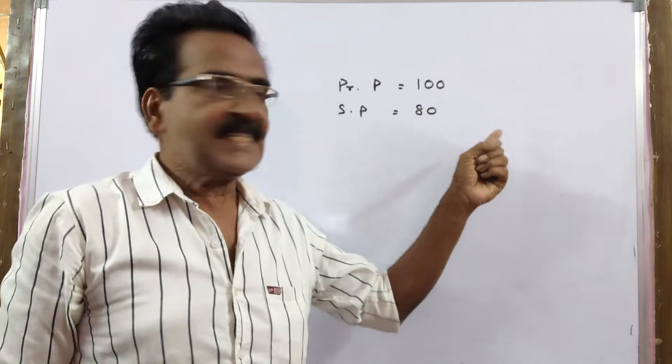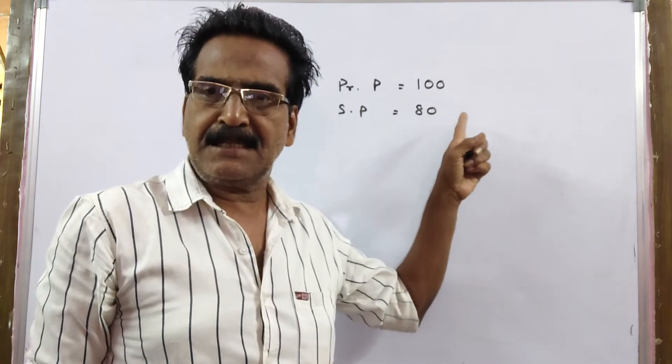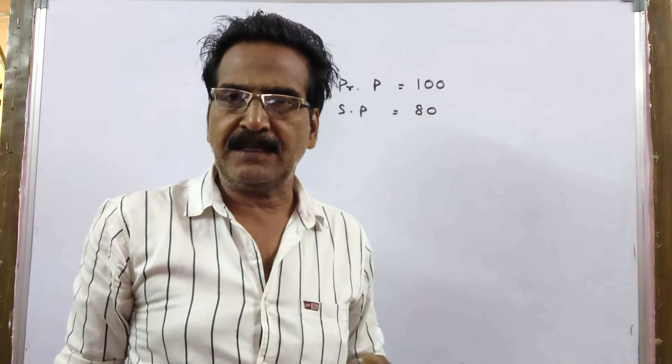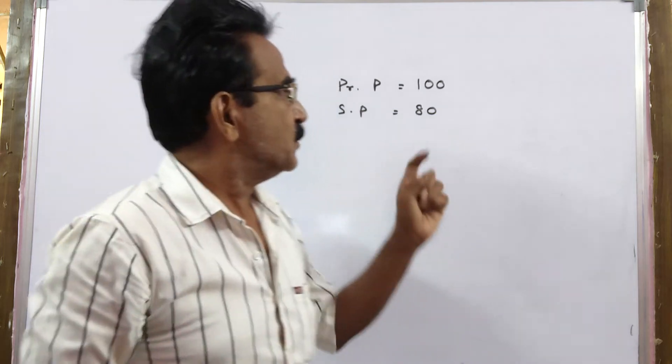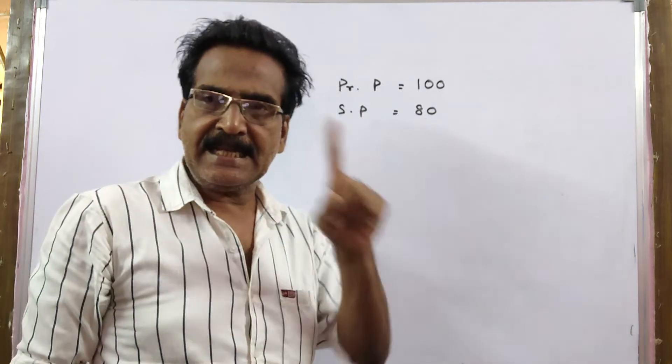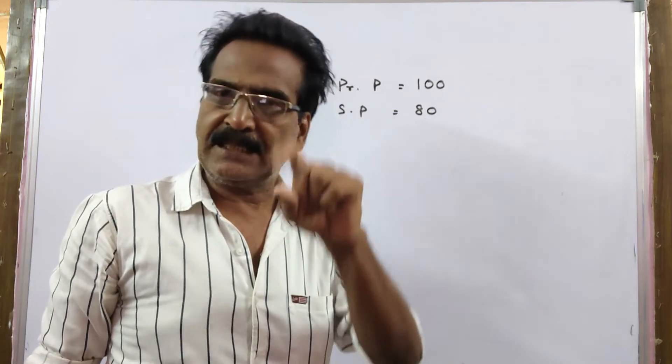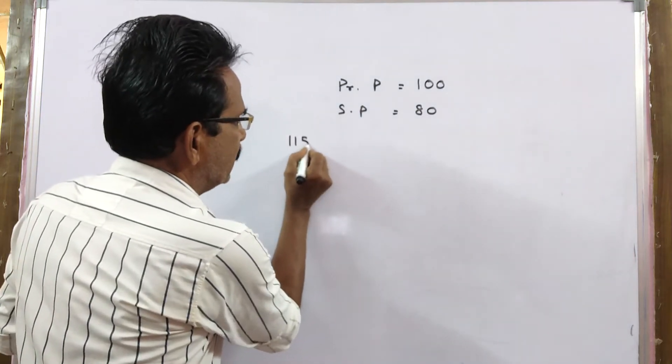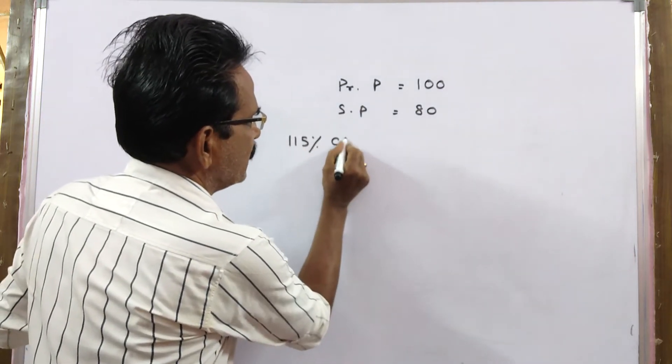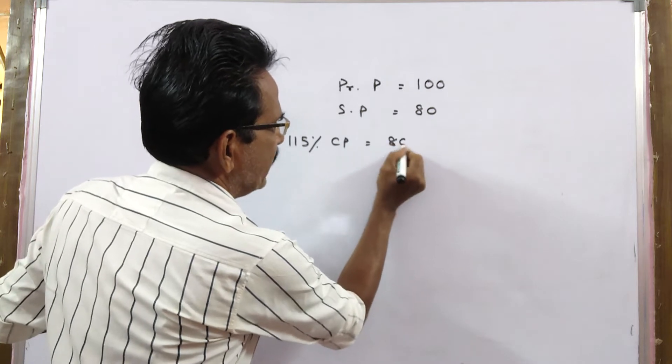So if he sells at this price, he is getting a profit of 15%. So this 80 is equal to 115% of the cost price. 115% of cost price is equal to 80.